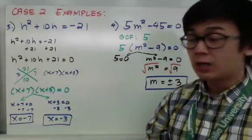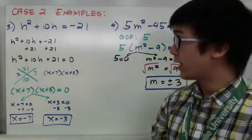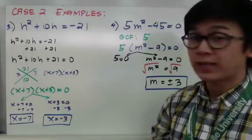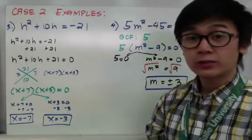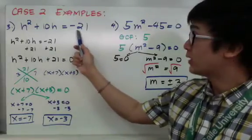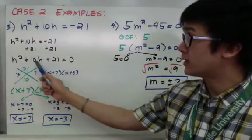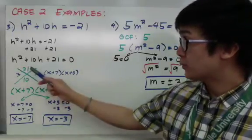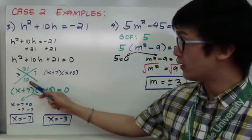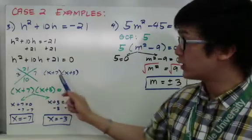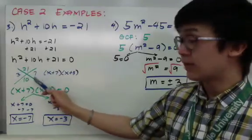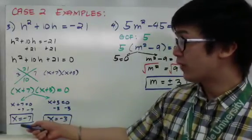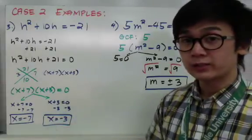For example 3, I need to set my equation to zero before factoring. I have h squared plus 10h equals negative 21. Adding 21 to both sides gives h squared plus 10h plus 21 equals 0. This is factorable: my last term is 21 and middle term is 10, so the two factors are 3 and 7, since 3 times 7 is 21 and 3 plus 7 is 10. I get h plus 7 times h plus 3 equals 0, giving h equals negative 7 and h equals negative 3.